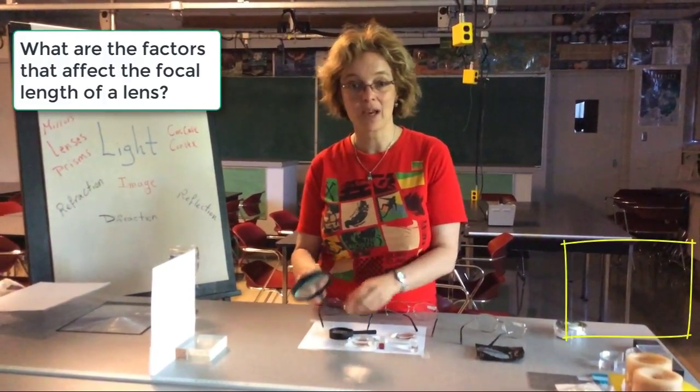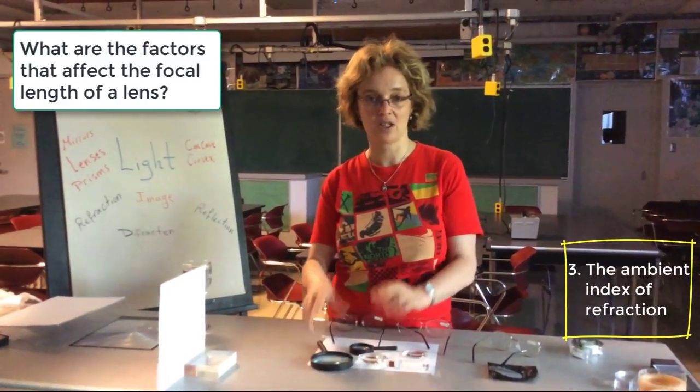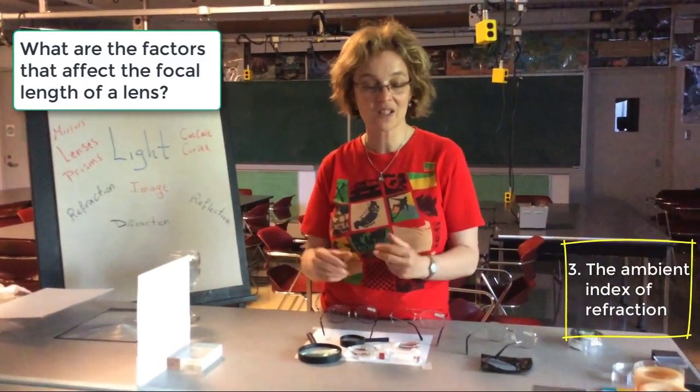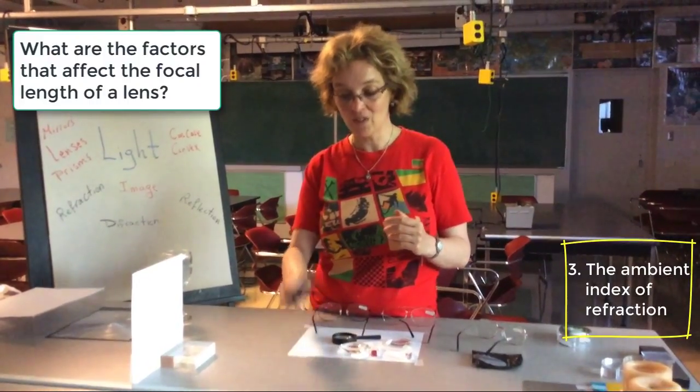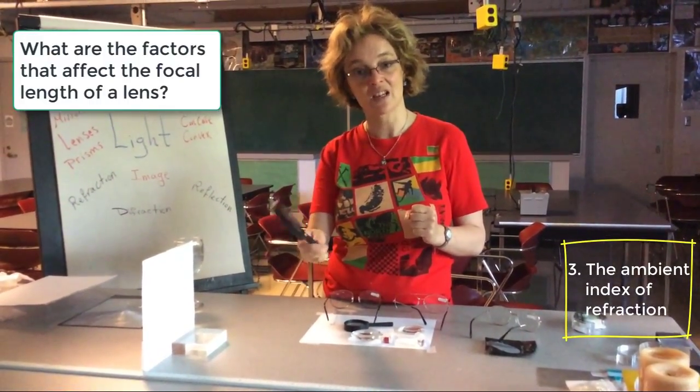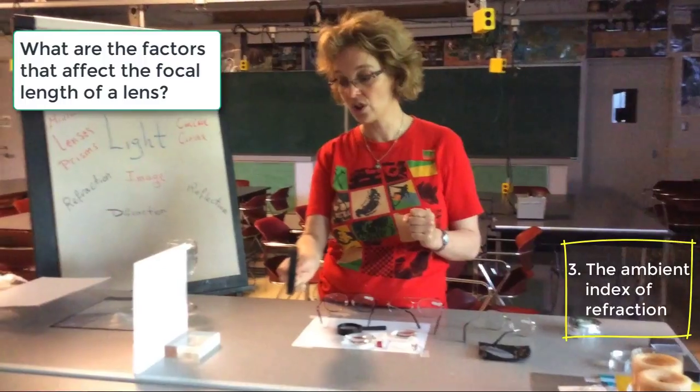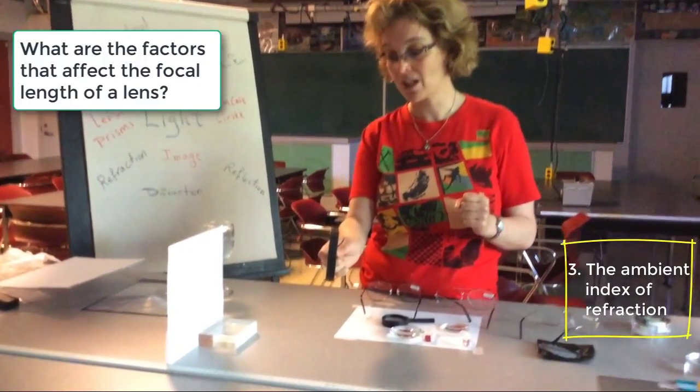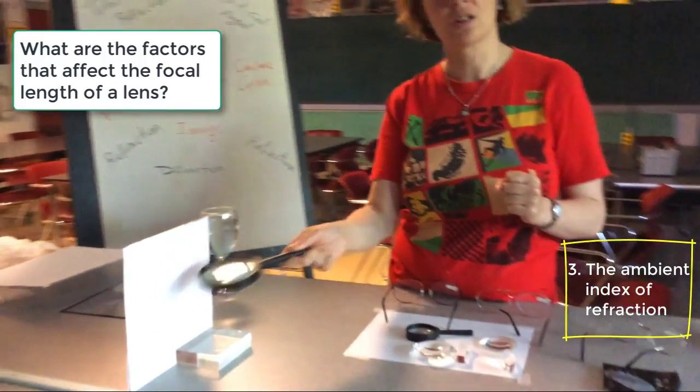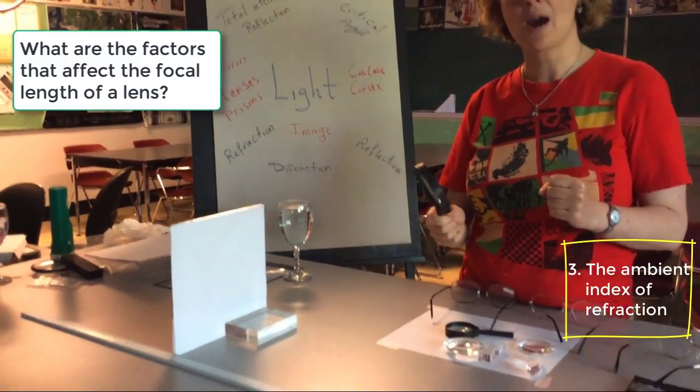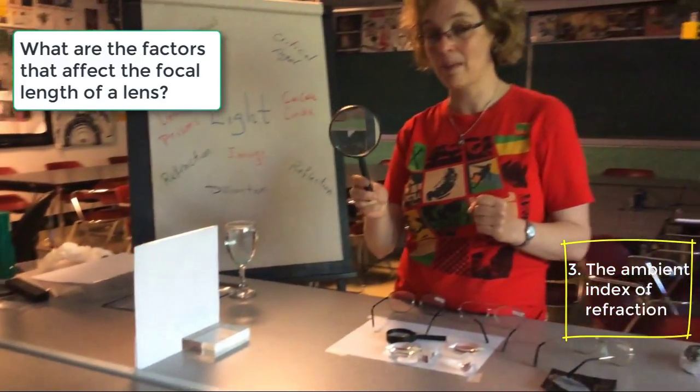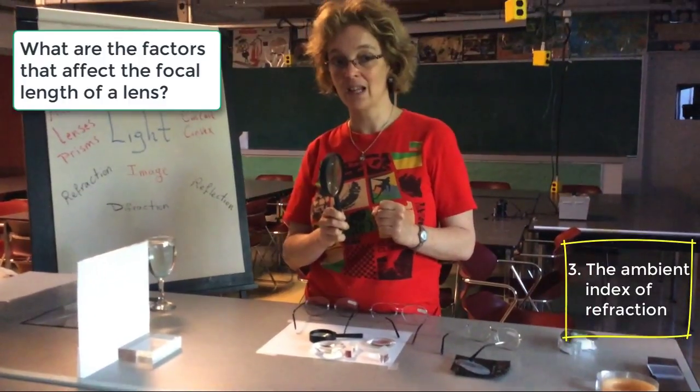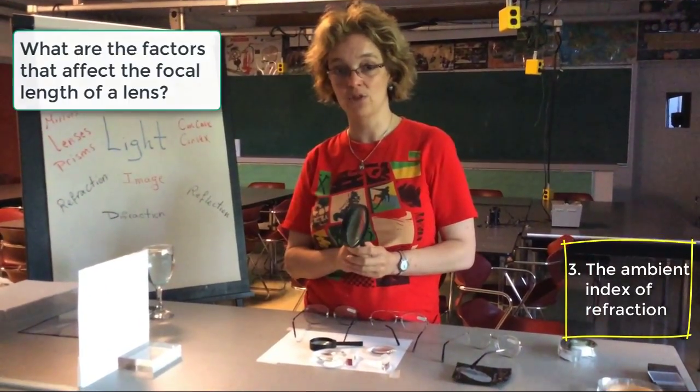The last thing that matters is the ambient index of refraction, where the lens is submerged in. If the lens is in the air, this lens is, as we can see, is a converging lens. The image is upside down. Here, it's focused on the screen. Now, when the lens, the same lens would have been, for example, submerged in water, the focal distance of the lens would have changed.